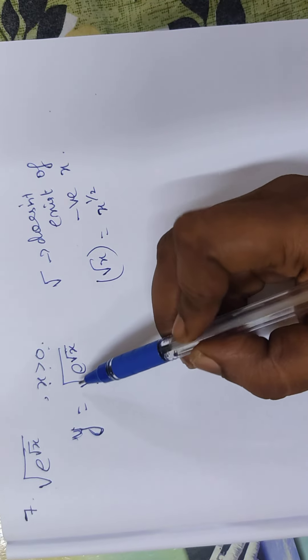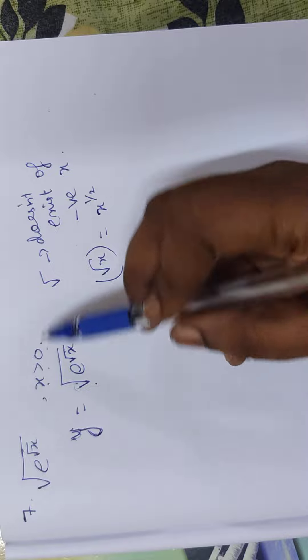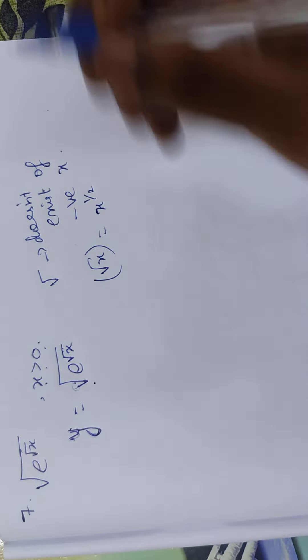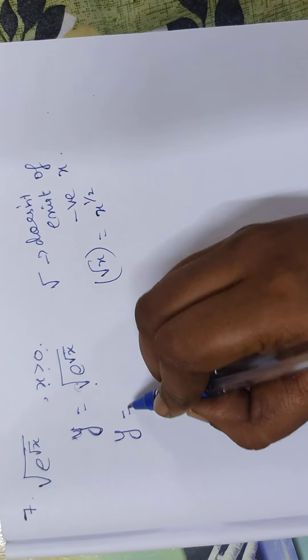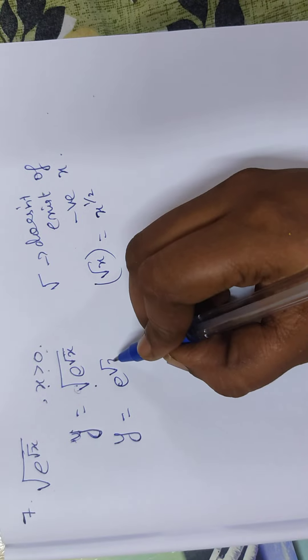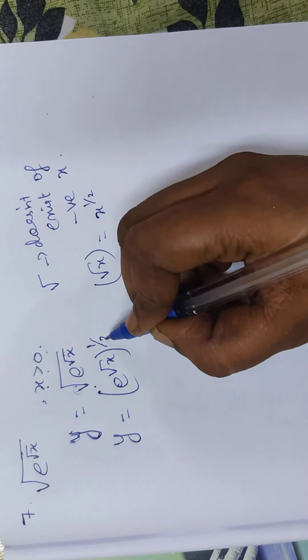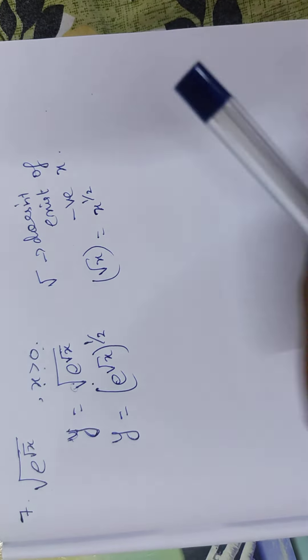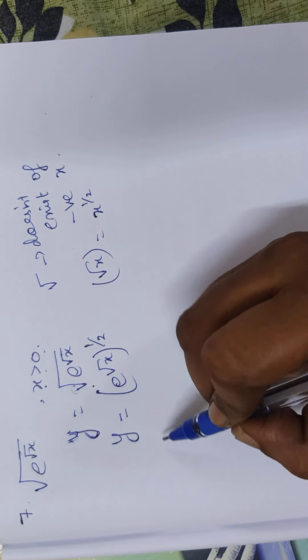So y is equal to e to the power root x, the whole power 1 by 2. We will differentiate start with respect to x.